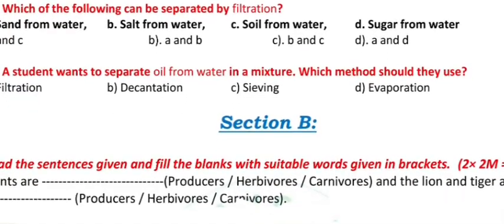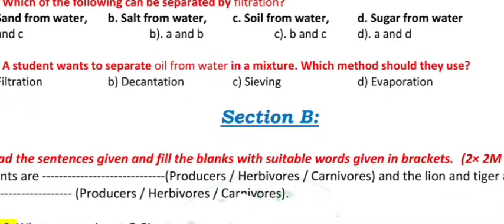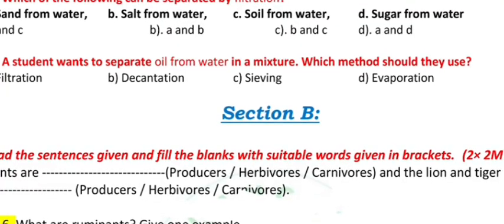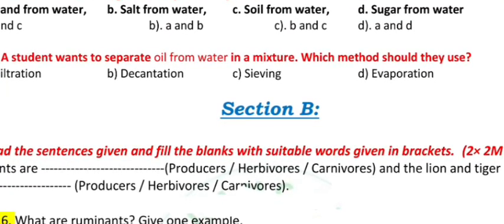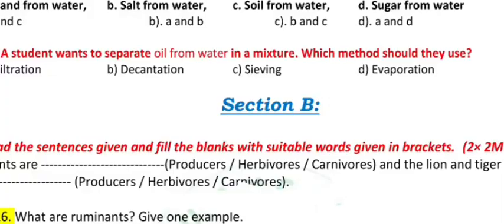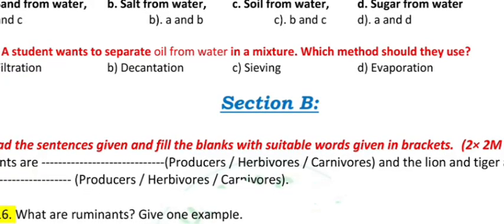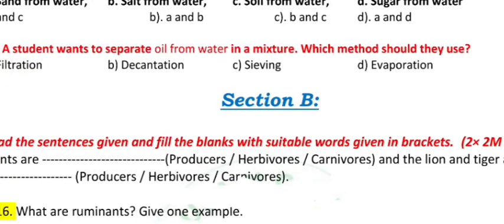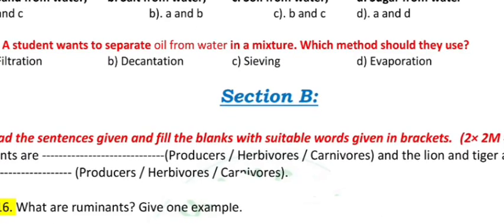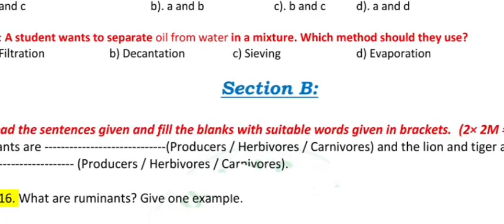Question 14: Which of the following can be separated by filtration? a) Sand from water, b) Salt from water, c) Soil from water, d) Sugar from water. Options are: a) A and C, b) A and B, c) B and C, d) A and D.